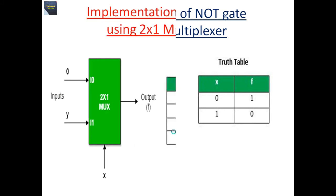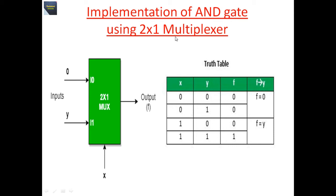Similarly, here is the implementation of an AND gate using a 2x1 multiplexer. Here i0 is always 0, and i1 is provided as y. x is the selection line. Since AND is multiplication: 0·0 = 0, 0·1 = 0, 1·0 = 0, and 1·1 = 1. This truth table confirms that this circuit acts as an AND gate, formed using a 2x1 multiplexer.